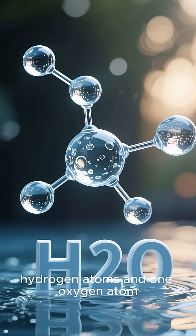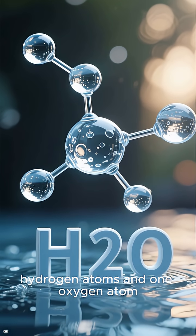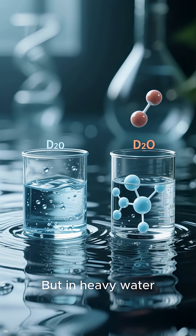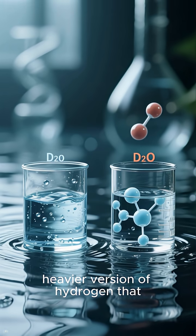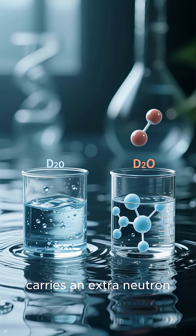Ordinary water has two hydrogen atoms and one oxygen atom. But in heavy water, those hydrogen atoms are replaced by deuterium, a heavier version of hydrogen that carries an extra neutron.